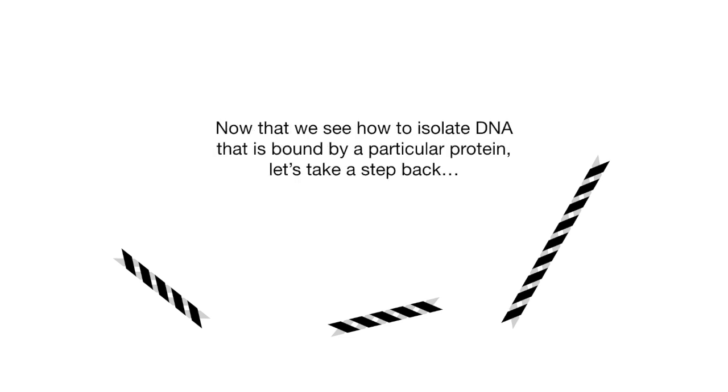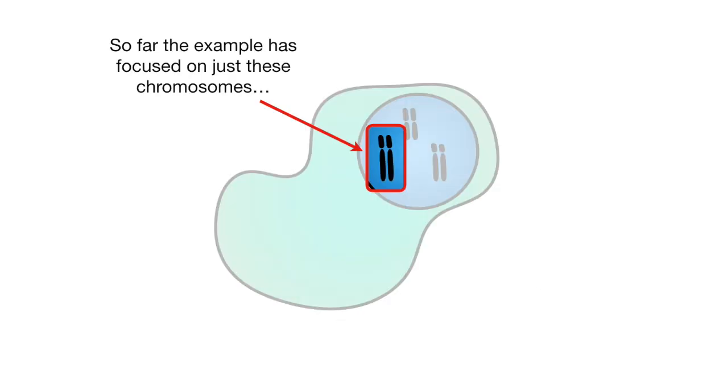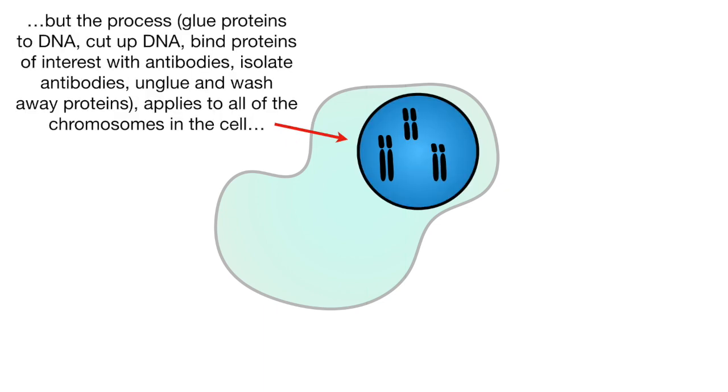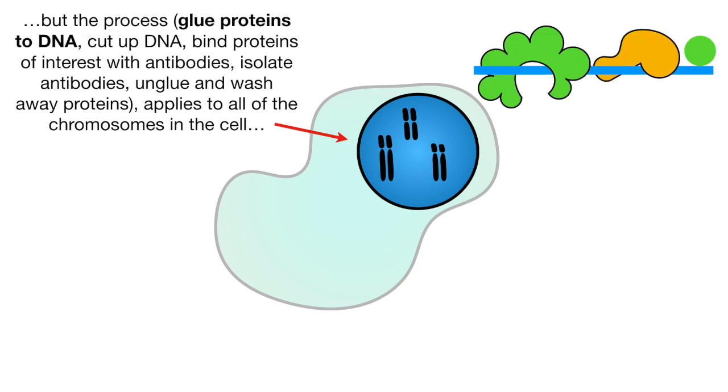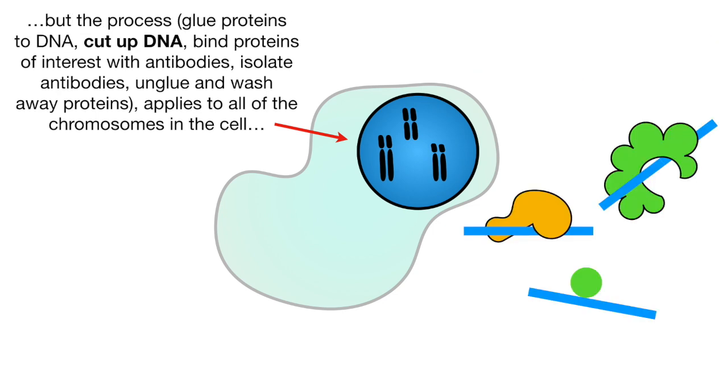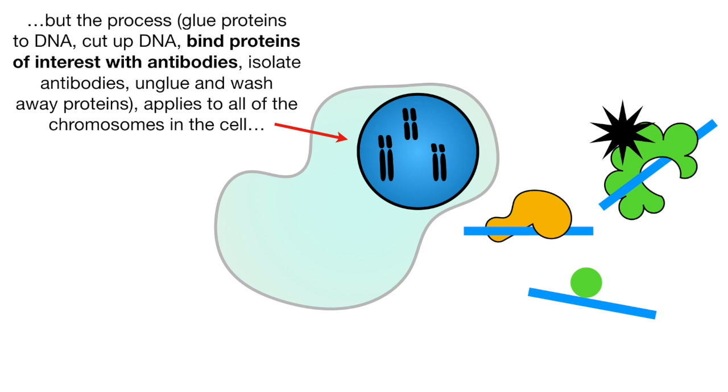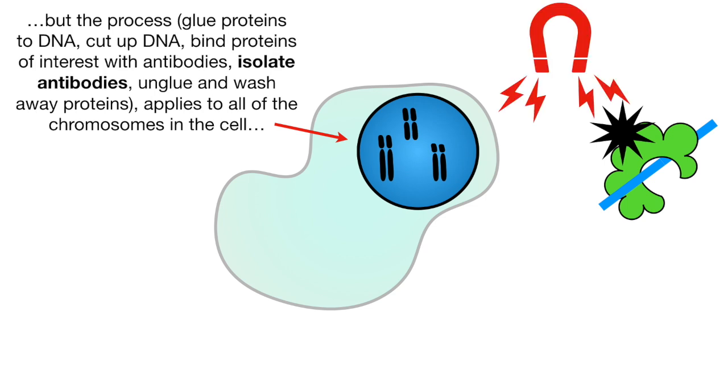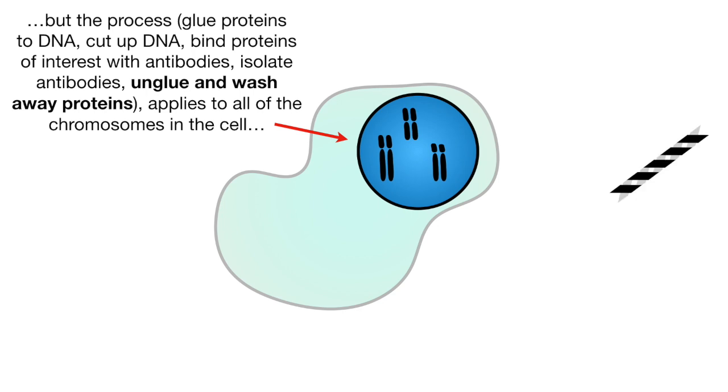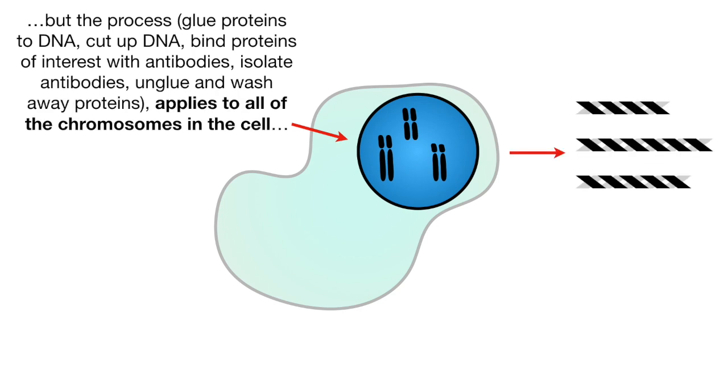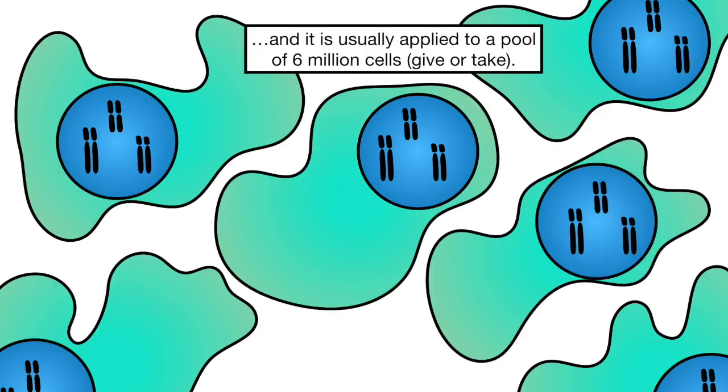Now that we see how to isolate DNA that is bound by a particular protein, let's take a step back. So far the example has focused on just these chromosomes. But the process - glue proteins to DNA, cut up DNA, bind proteins of interest with antibodies, isolate antibodies, unglue and wash away proteins - applies to all the chromosomes in the cell. And it is usually applied to a pool of 6 million cells, give or take a few.